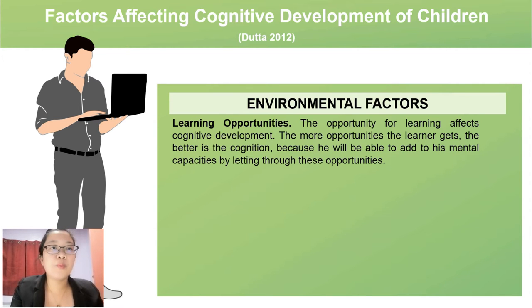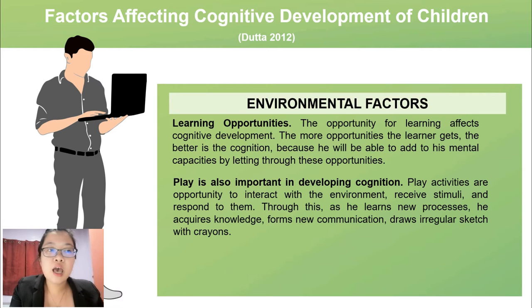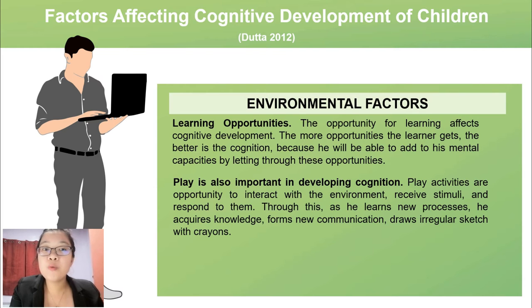The first environmental factor is learning opportunities. The opportunity for learning affects cognitive development; the more opportunities the learner gets, the better the cognition, because he will be able to add to his mental capacities through these opportunities. Play is also important in developing cognition — play activities are opportunities to interact with the environment, receive stimuli and respond to them, learn new processes, and acquire knowledge.